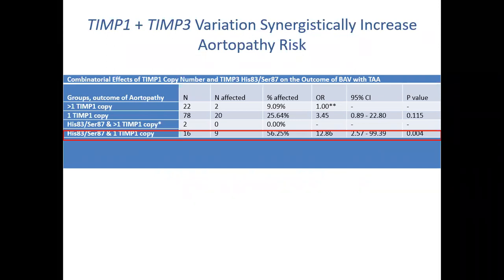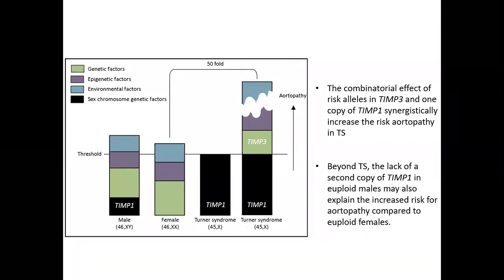We then looked at the synergy between having the TMP3 variants and one copy of TMP1, and showed that it significantly increases the risk of aortopathy — including both bicuspid aortic valve and aortic disease — with about a 13-fold increased risk. Using our threshold model, we propose it's the combinatorial effect of risk alleles in TMP3 and one copy of TMP1 that synergistically increases the risk of aortopathy in Turner syndrome. Beyond Turner syndrome, the lack of a second copy of TMP1 in euploid males may also explain their increased risk for aortopathy compared to euploid females.